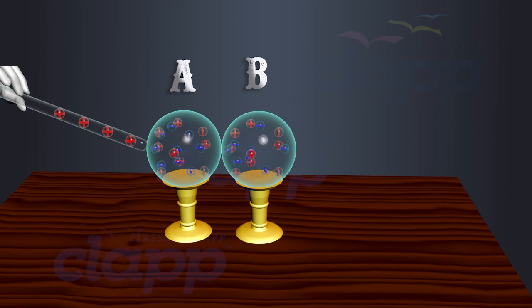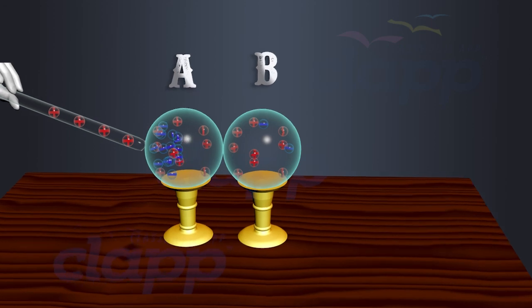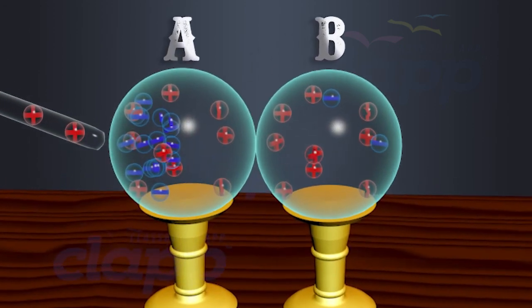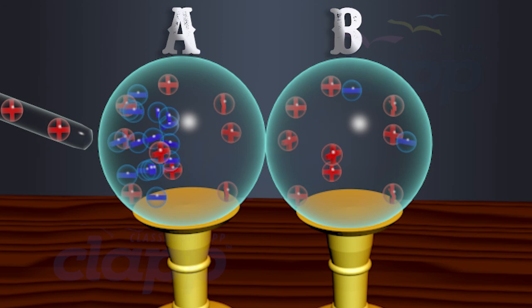The free electrons in the spheres are attracted towards the rod, creating an excess of positive charge on the rear surface of Sphere B. The accumulated charge remains on the surface as long as the glass rod is held near Sphere A.